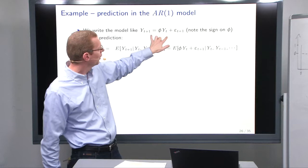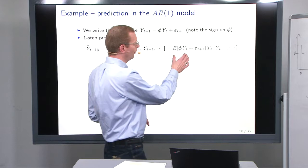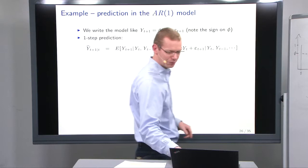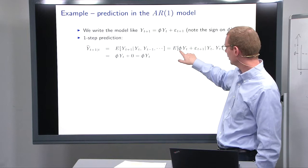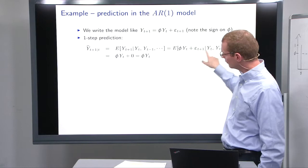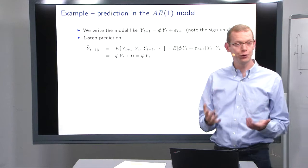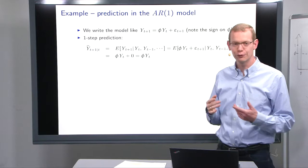y at t plus 1 is effectively phi times y_t plus epsilon at t plus 1 — that's just plugging in the definition from the model. Since the expectation is a linear operator, we can apply it in parts. The expectation of phi times y_t given y_t is just phi times y_t. And the expectation of epsilon at t plus 1 — that's a future epsilon, so it's unknown, meaning it's zero. So we get that the expectation is phi times y_t.